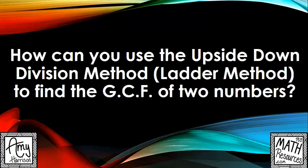How can you use the upside-down division method, also known as the ladder method, to find the greatest common factor of two numbers?